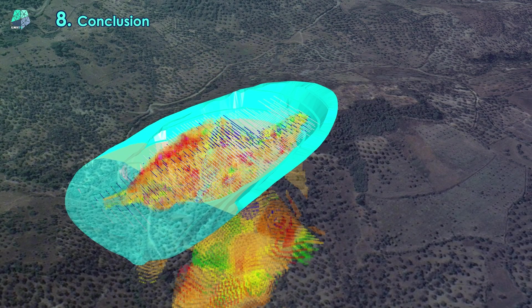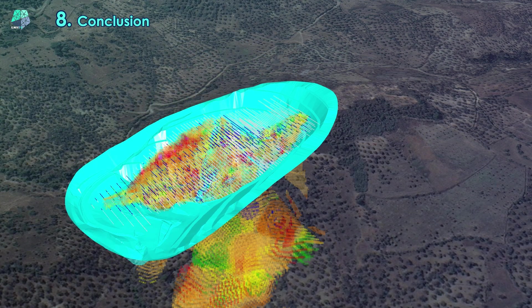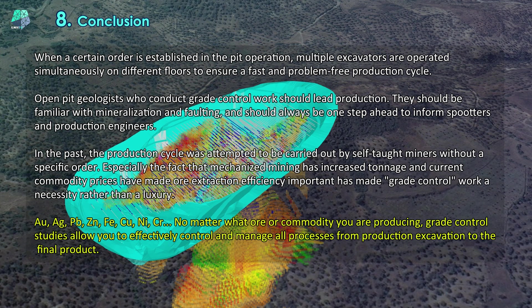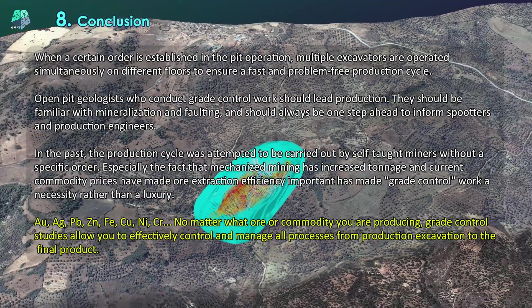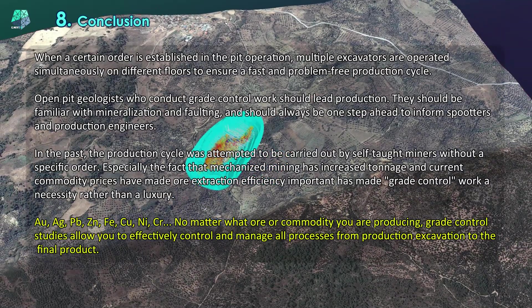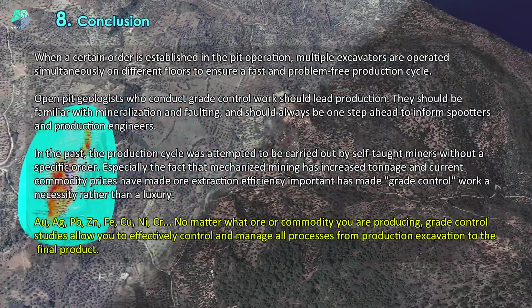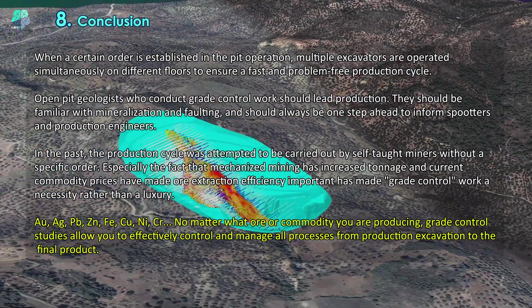Commissioning a production system requires a robust grade control program. Whether your commodity is gold, silver, copper, zinc, iron, nickel, chrome, or any other metal, seeking consultancy enables you to develop the most favorable grade control method for issue-free and exceptionally profitable operations.